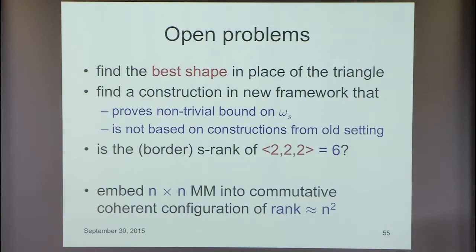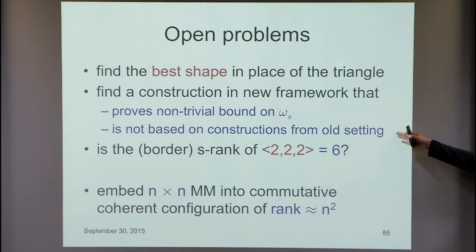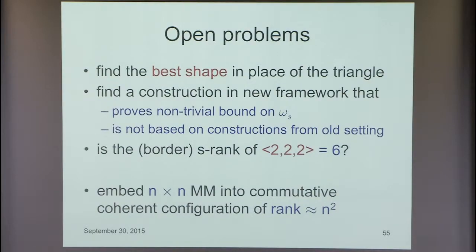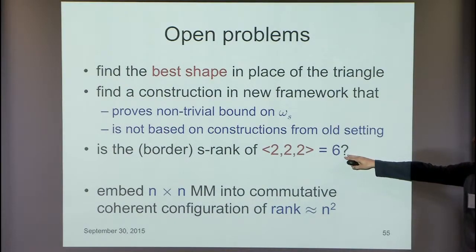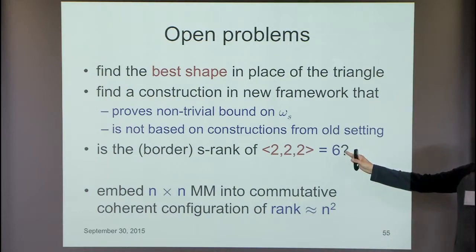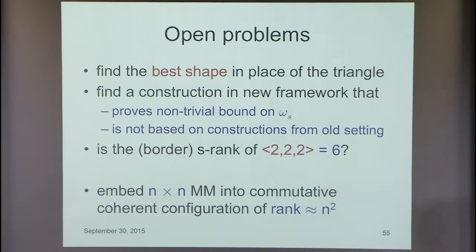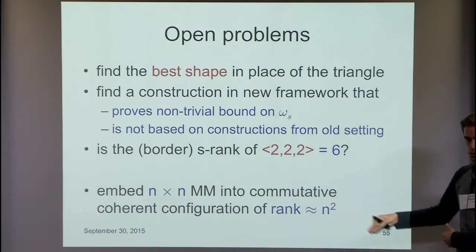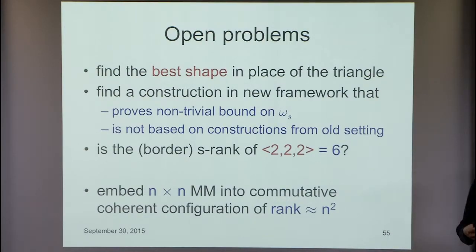Open problems: find the best shape in place of the triangle; find a construction in the new coherent configuration framework proving some non-trivial bound on Ω not based on the old group setting; determine whether border s-rank of 2×2 matrix multiplication is 6 instead of 7; find an example where border s-rank really helps with matrix multiplication tensors; and in general, can you reduce matrix multiplication into commutative coherent configurations of rank about n², which would give Ω=2.